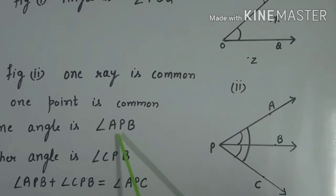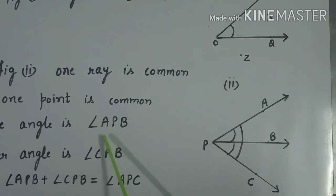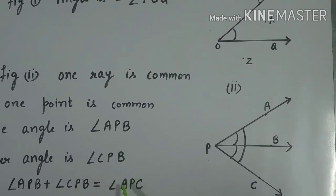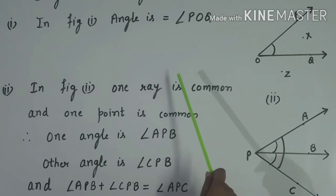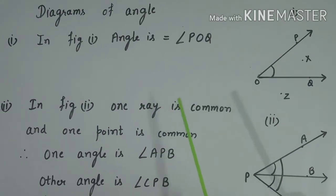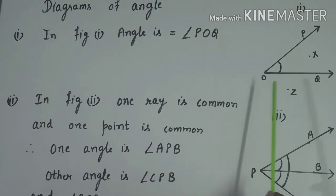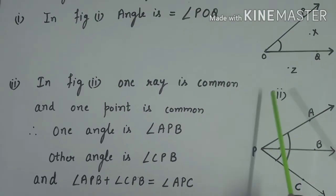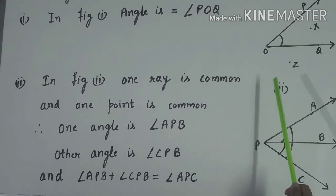We have to focus on the vertex, which is the common middle point. So for the three angles APB, CPB, and APC, the vertex P is always in the middle. We have discussed angle, sides of angle, vertex, exterior point, interior point, and point on the angle. I hope today's topic is clear. Thank you.